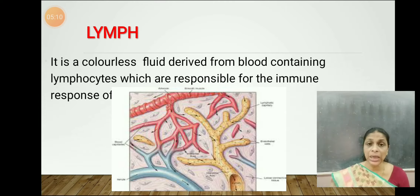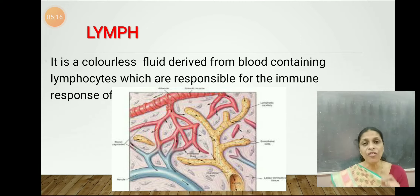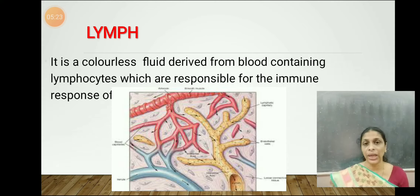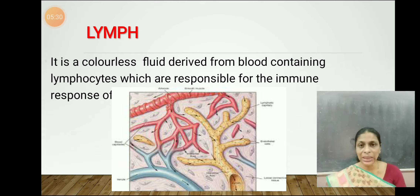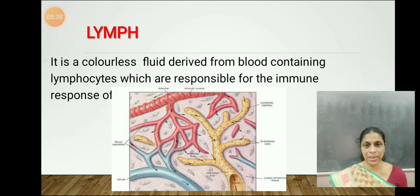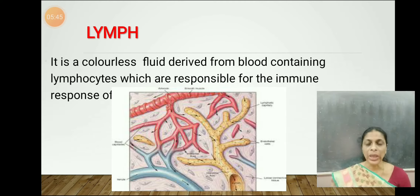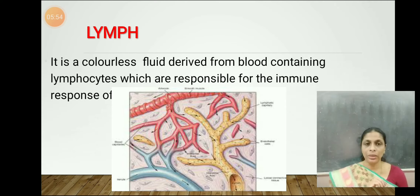Lymph is colorless in nature and it flows through a system called the lymphatic system. There is a separate system in our body for the movement of lymph, consisting of lymph vessels. Blood flows through blood vessels like arteries, veins, and capillaries; whereas lymph flows through lymph vessels. In the picture you can see red colored arteries, blue colored veins, and in between, pale yellowish colored lymphatic vessels through which the lymph flows.